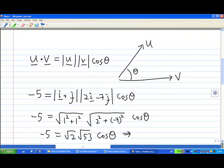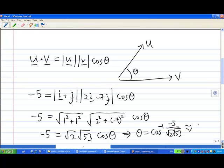So, if we press the calculator, theta equals cos inverse of minus 5 over square root of 2 and square root of 53, and this is approximately about 119 degrees.